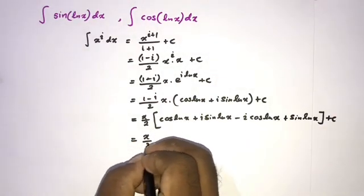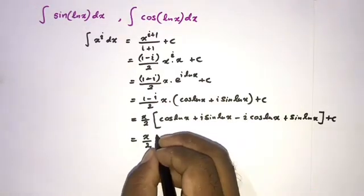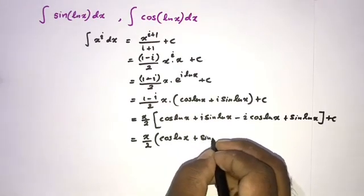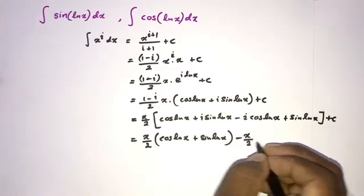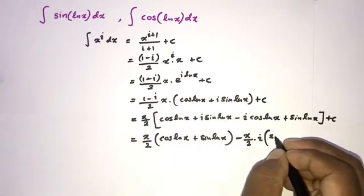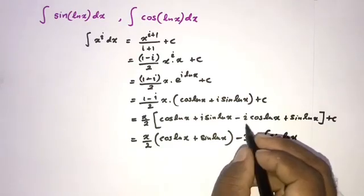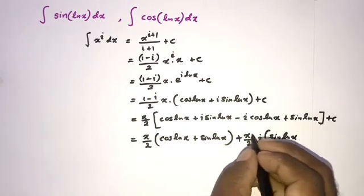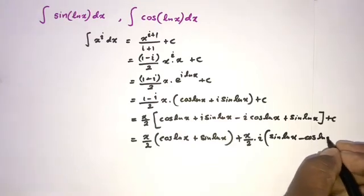Collecting terms: the real part is x over 2 times (cosine of natural log of x plus sine of natural log of x). The imaginary part gives plus i times x over 2 times (sine of natural log of x minus cosine of natural log of x), plus c.